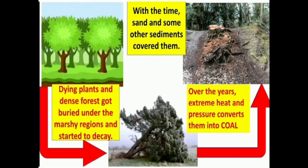Dying plants and dense forests got buried under marshy regions and started to decay. Sand and other sediments covered them. Over the years, extreme heat and pressure converted them into coal. In India, coal mines are situated in Singrauli (Madhya Pradesh), Talcher (Odisha), Raniganj (West Bengal), Neyveli (Tamil Nadu) and Singrauli (Telangana).